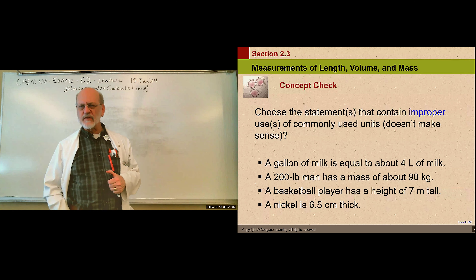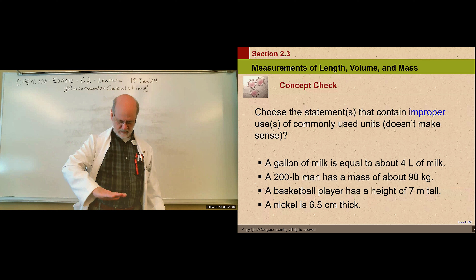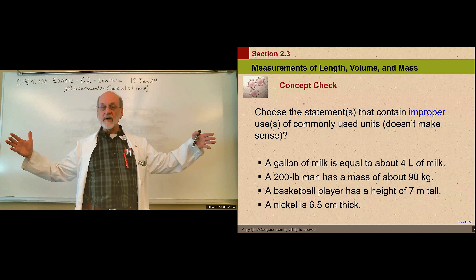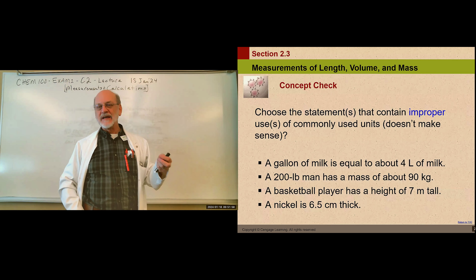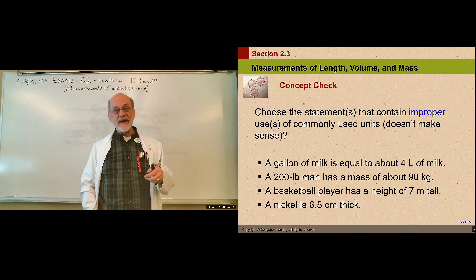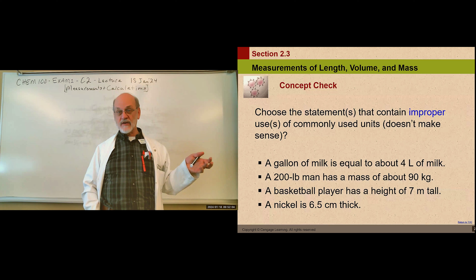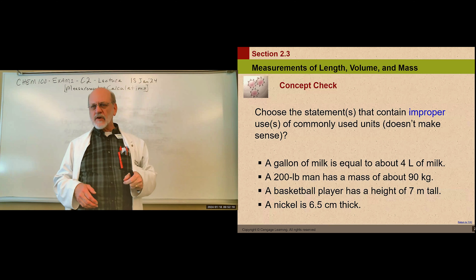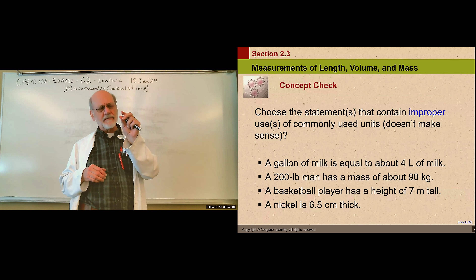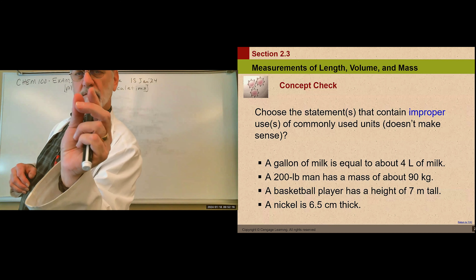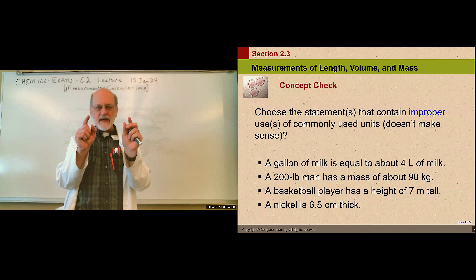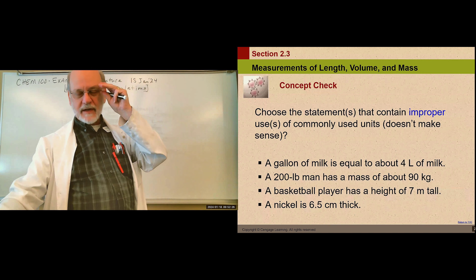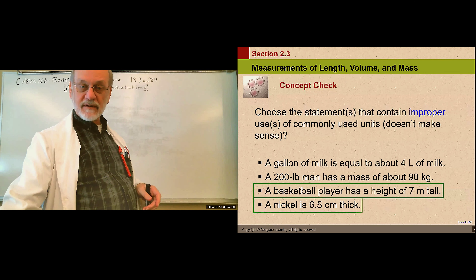How about a nickel being 6.5 centimeters thick? A centimeter is about this big, so 6.5 of them stacked together — your nickel is going to be about that thick. That makes no sense whatsoever. So the two that make no sense are the basketball player one and the nickel one.